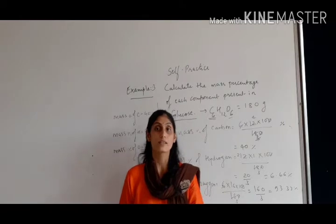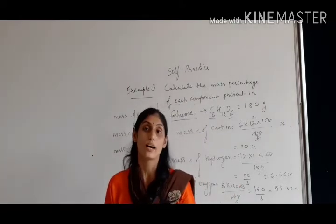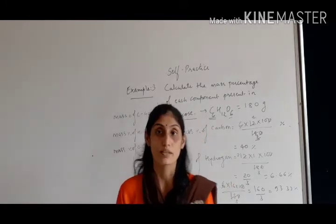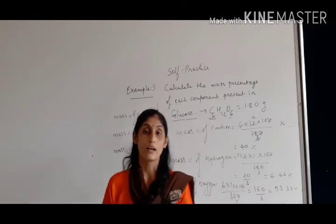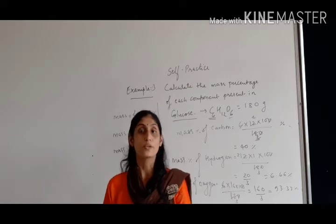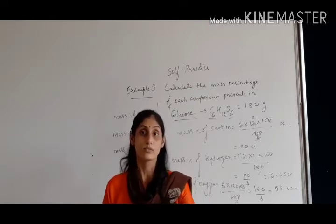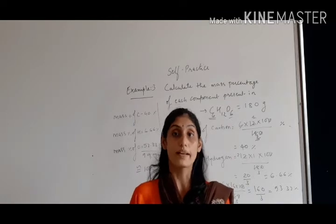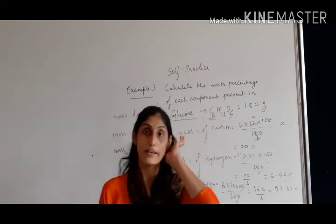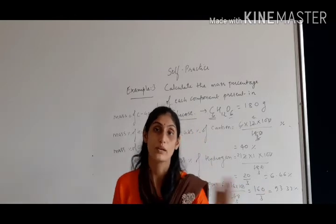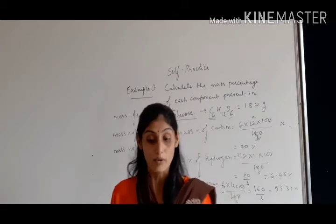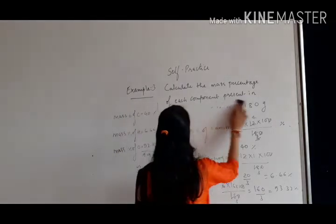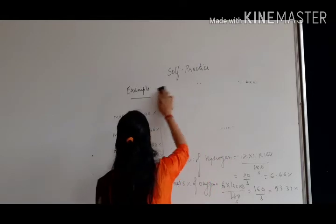The second example is about baking soda. Children, we have learnt that baking soda is chemically known as sodium bicarbonate or sodium hydrogen carbonate. We also learnt about sodium chloride which is common salt or table salt, and baking soda and washing soda. So the second example asks us to find out the mass percentage of sodium in baking soda. First we need to be clear about what baking soda is — it is chemically sodium hydrogen carbonate.